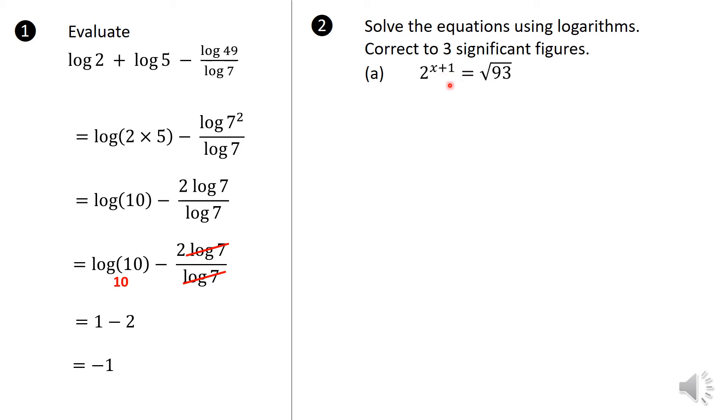So we have this equation here. You can't use indices to solve this because there's no way for you to make the basis to be the same. And the best thing to do is we have to take log on both sides. So we're going to take the common log on both sides of the equation. Right, so now we're going to use the power law to take this x plus 1 quantity and put it in front of the log 2. And then we're going to get rid of this log 2 by dividing both sides by log 2.